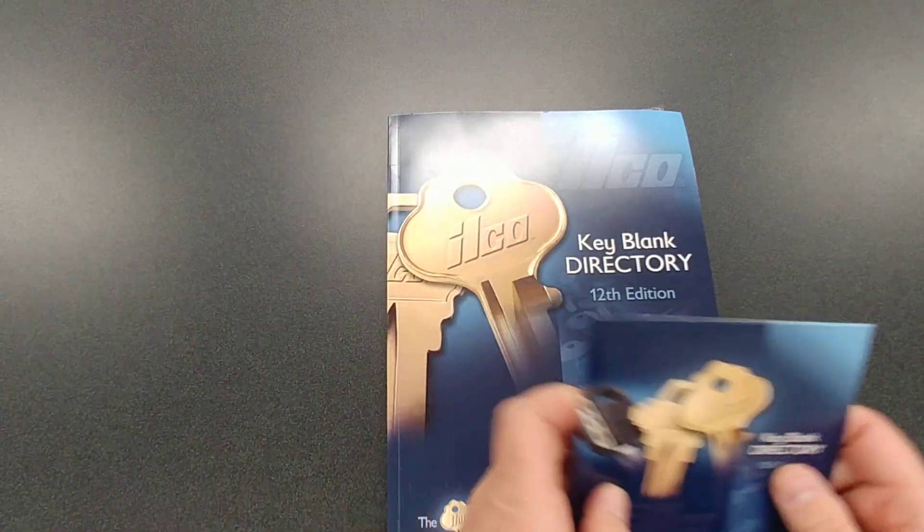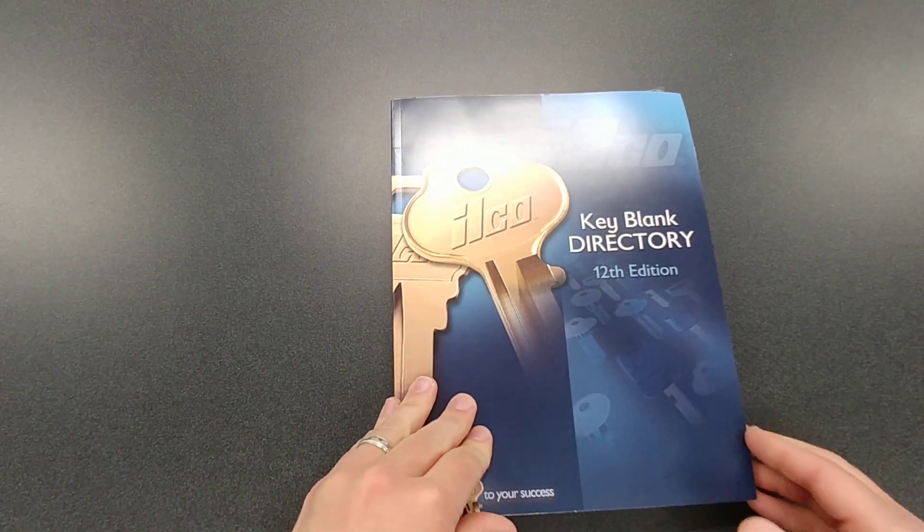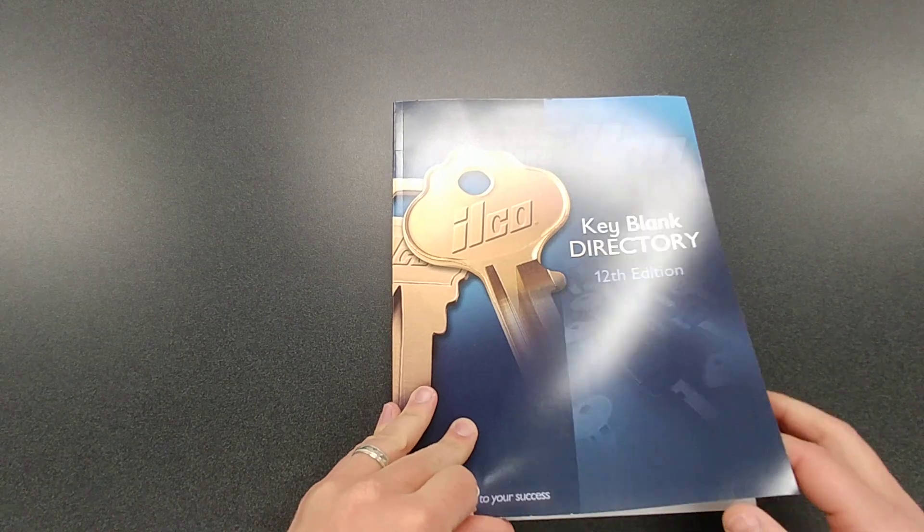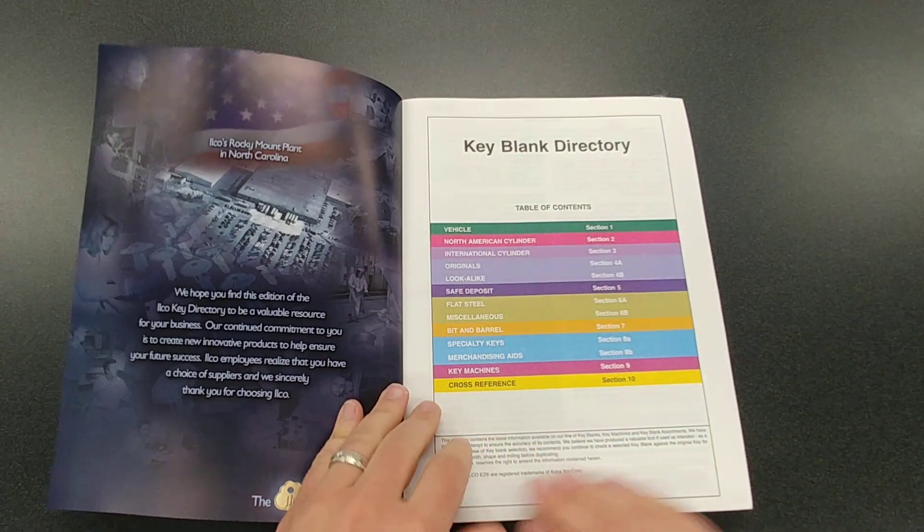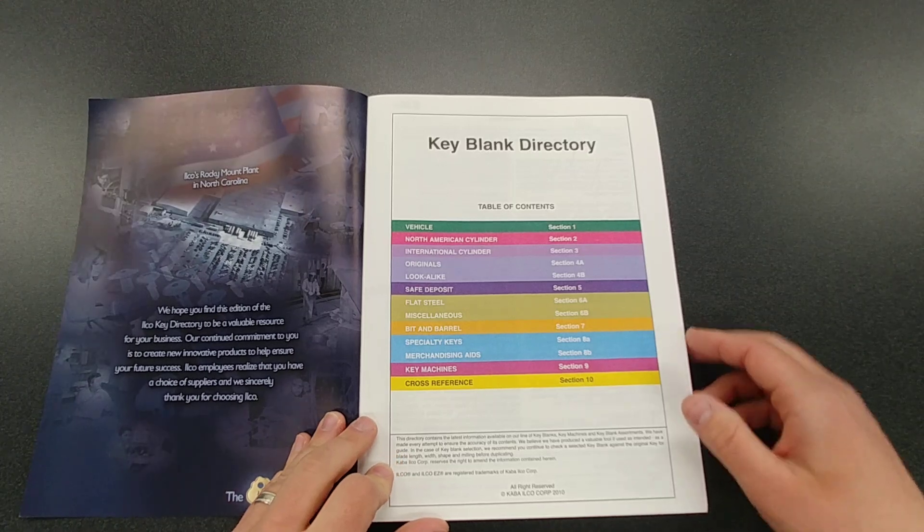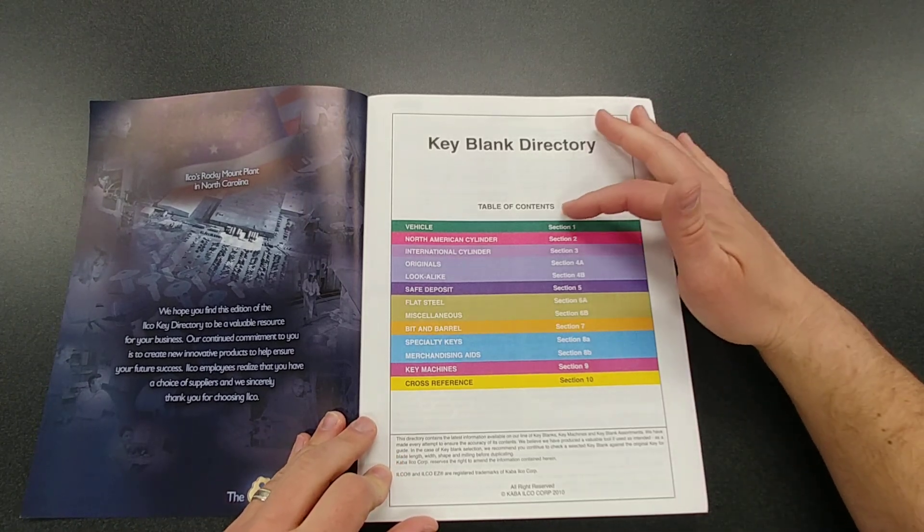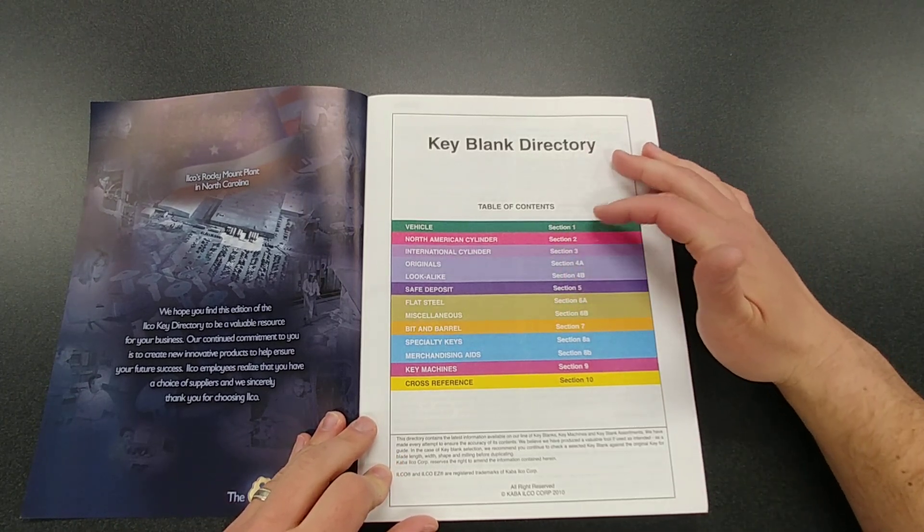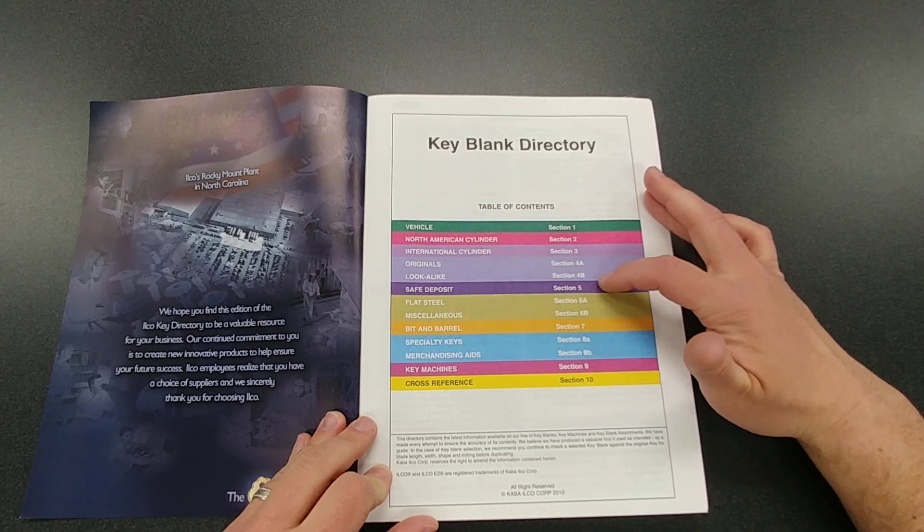So let me open up this book and just kind of give you a quick overview and point out a couple things that sometimes get some people a little confused. So I'll put up to the table of contents here and you can see it just kind of listed in section. Color-coded vehicle, cylinder, originals, safety deposit box, flat steel.